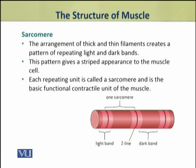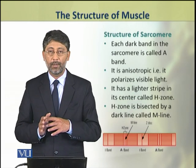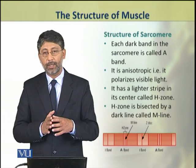Dear students, this thick and thin filament arrangement in myofibrils produces a particular pattern of light and dark bands in muscle cells, where light bands alternate with dark-colored bands. As a result, muscle cells produce a striped appearance, that is, striations. Every repeating unit of light and dark band is known as a sarcomere, and this sarcomere is actually the functional unit of contraction in a muscle. Dear students, now we shall discuss the detailed structure of the sarcomere.